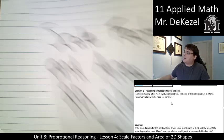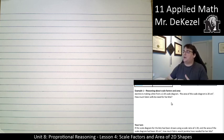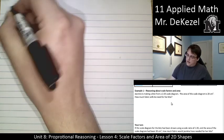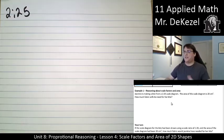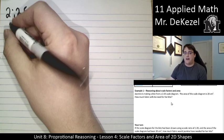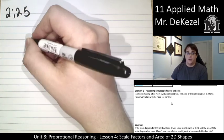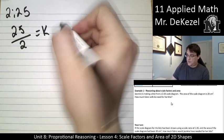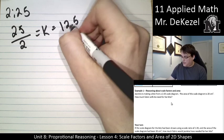Jasmine is making a kite from a 2 to 25 scale diagram. The area of the scale diagram is 20 centimeters squared. How much fabric will she need for her kite? In this case, we're taking the diagram that's on the piece of paper as the original. We want to scale it up. So a scale of 2 to 25, we're going to have a scale factor that's larger than one. The way to do that is to take 25 and divide it by 2 to get k, and the scale factor would be 12.5.